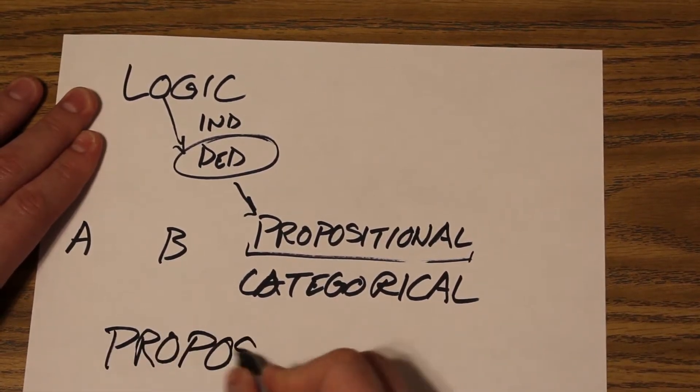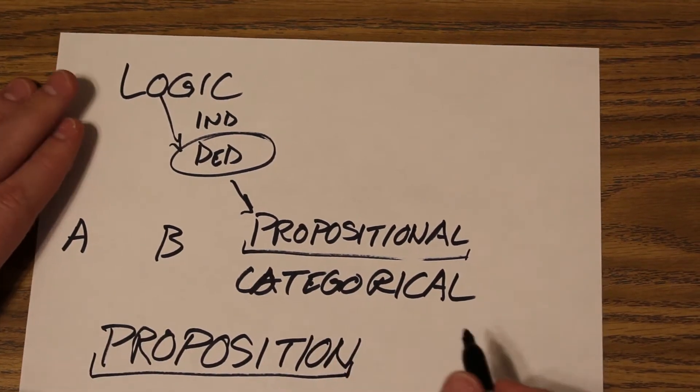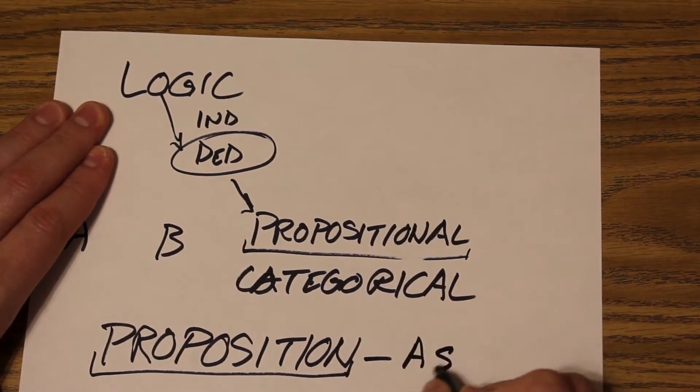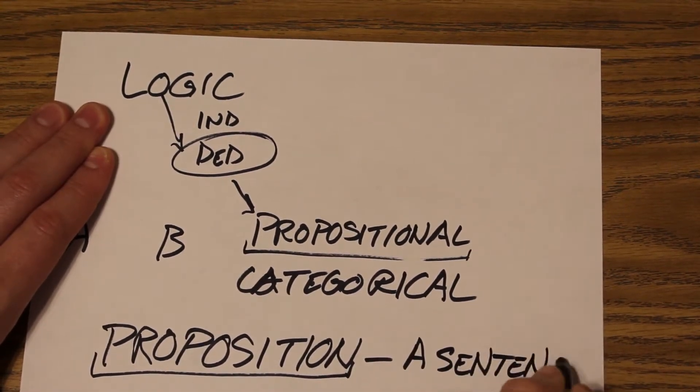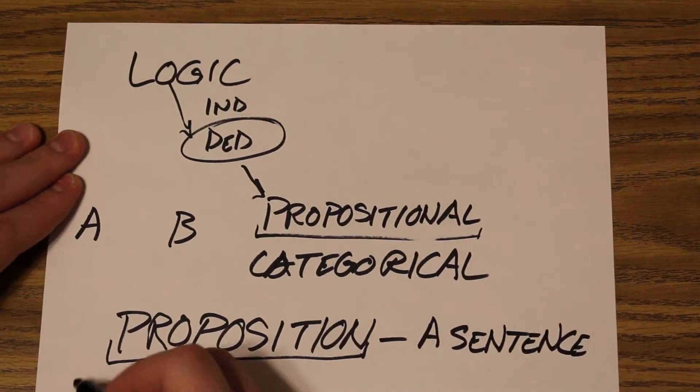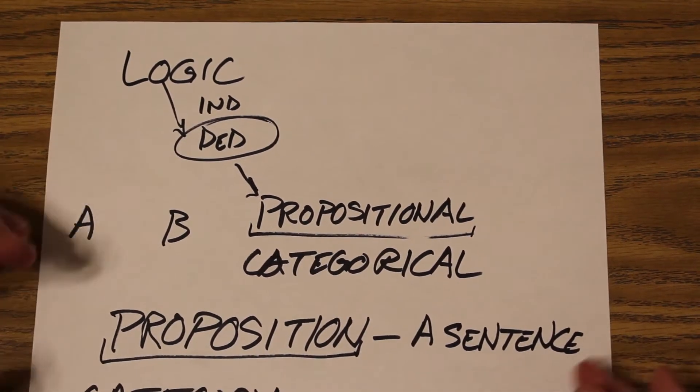Let's define what is a proposition. Here's the cut and dry oversimplification. It's probably an oversimplification, but the best way to think about it is it's a sentence. That's it. A category is different. Category is going to be a trait.